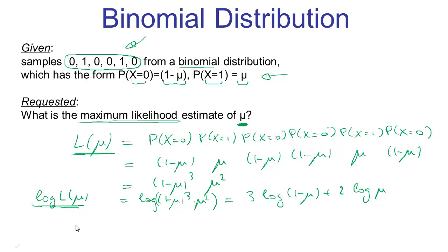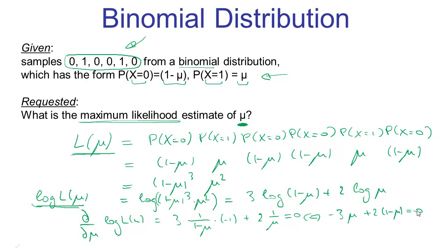To find the maximum, we set the derivative of the log likelihood equal to 0. Multiplying through by (1 minus mu) and mu gives us minus 3 mu plus 2 times (1 minus mu) equals 0, which equivalently is minus 5 mu plus 2 equals 0. This gives us an extremum value of mu equals 2 over 5.